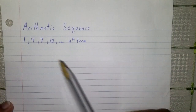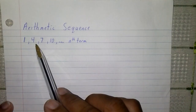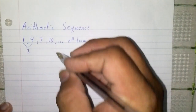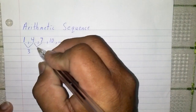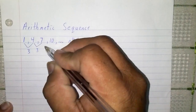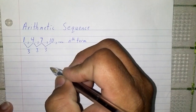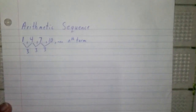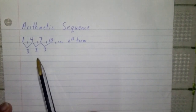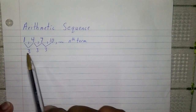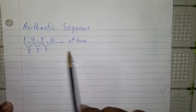If you look at the numbers 1 and 4, what's the difference? 3. What's the difference between 4 and 7? 3 again. 7 and 10? 3. So you'll notice that the difference between each pair of terms is 3.